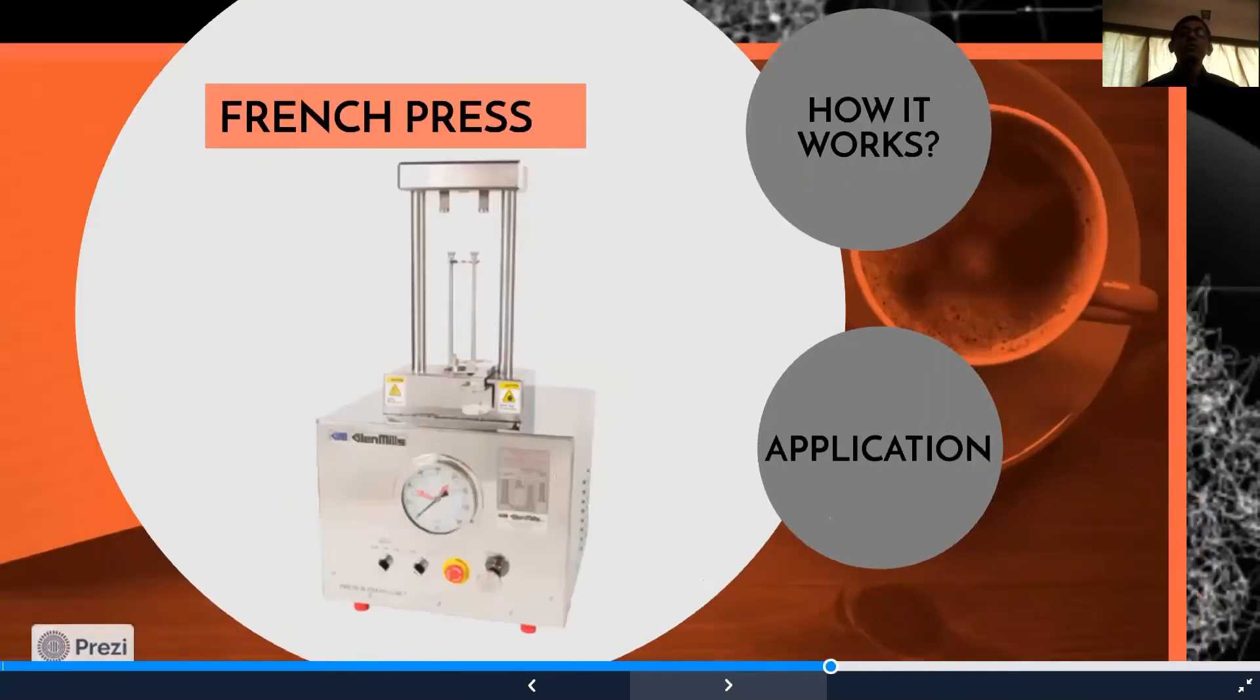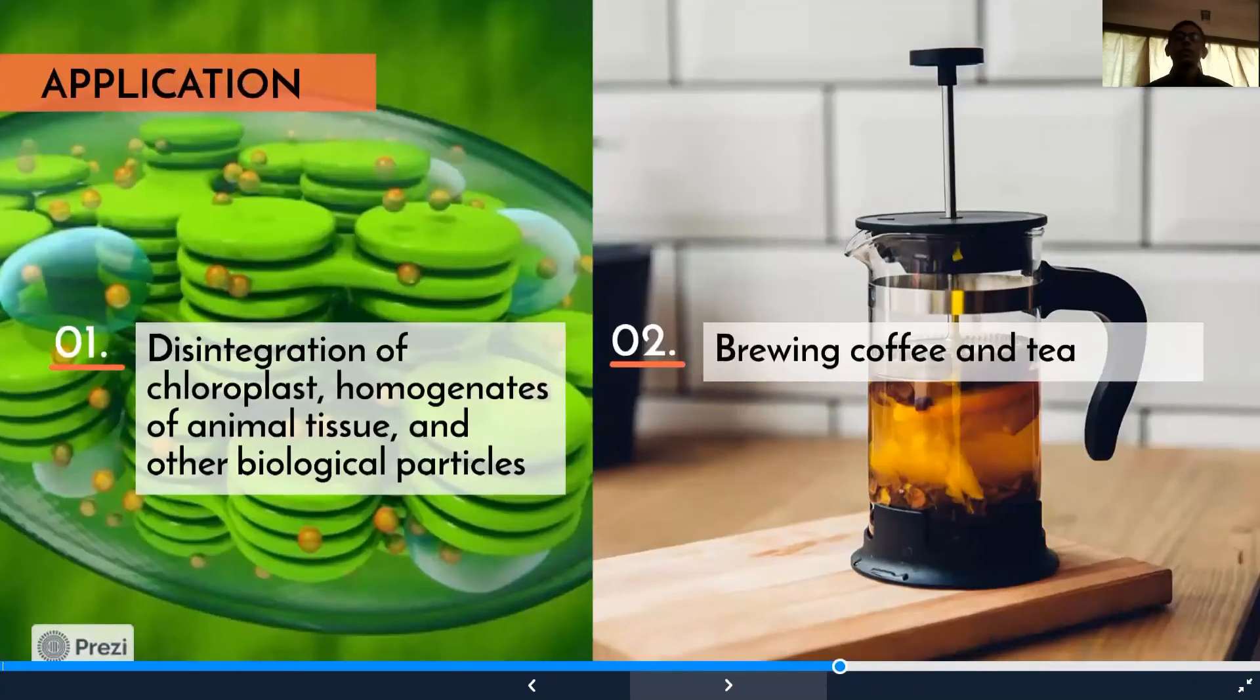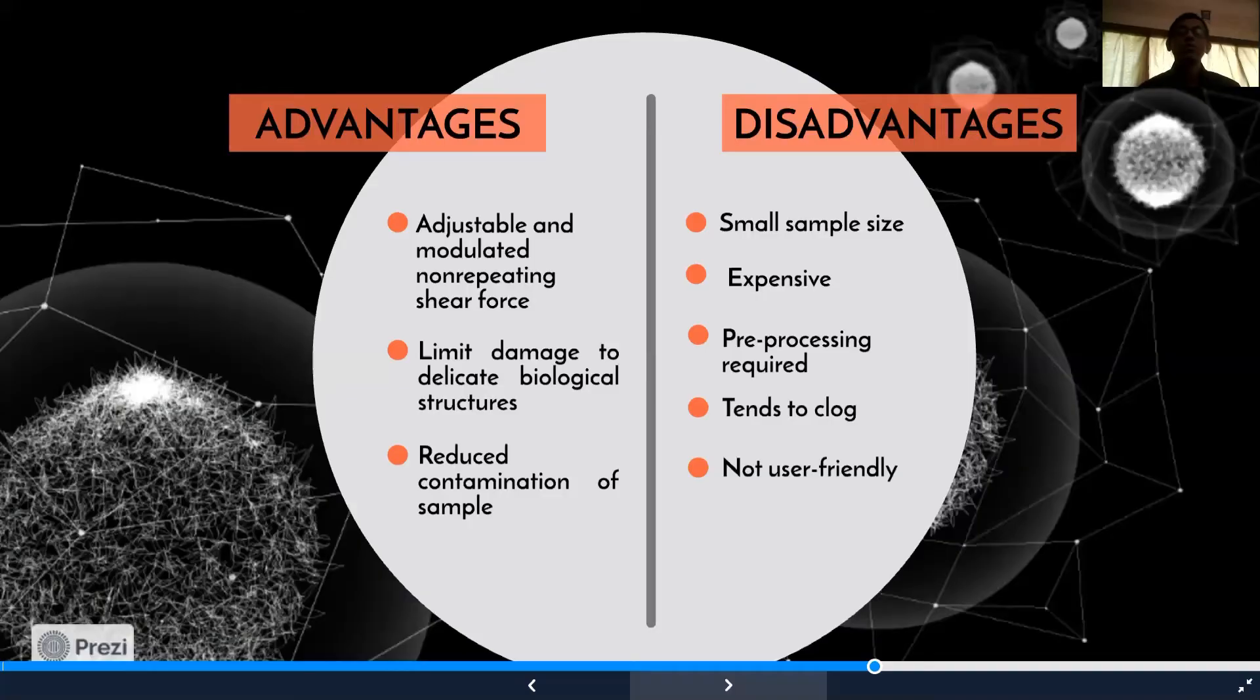Applications of French press include brewing coffee and tea, and in biochemistry and engineering applications for disruption of E. coli cells, homogenizing animal tissue, and other biological particles. Advantages include being adjustable and modular, non-repeated shear force limiting damage to the nucleic acid structure, and reduced contamination of the sample due to the stainless steel equipment. Disadvantages are small sample size, rather expensive due to low throughput, requires pre-processing and sometimes tends to clog the needle valve, and it is not user-friendly.